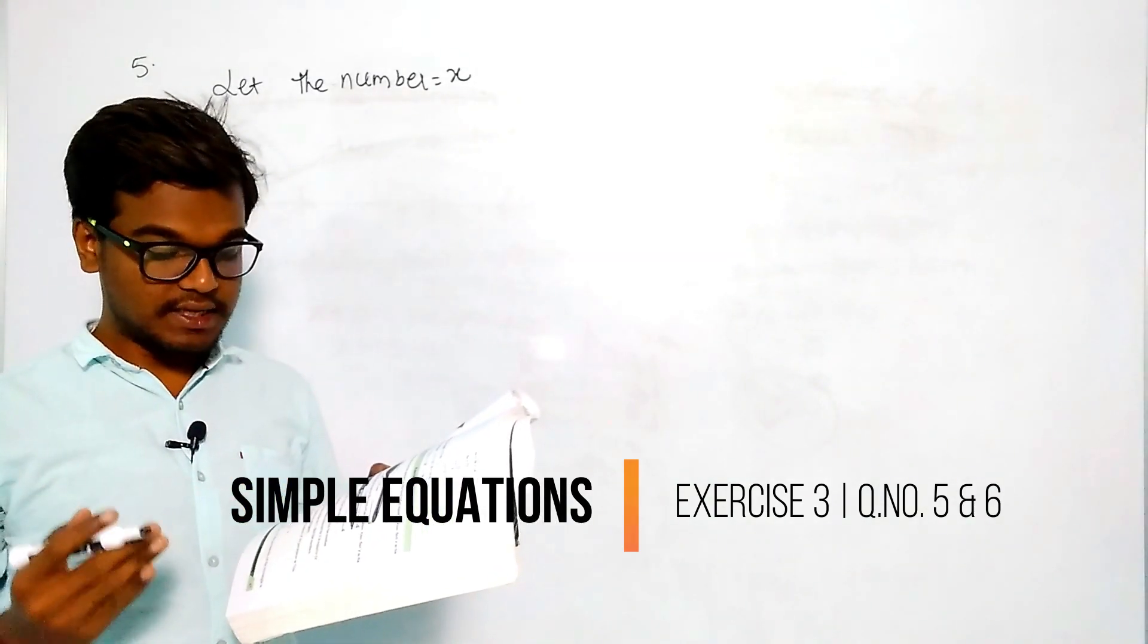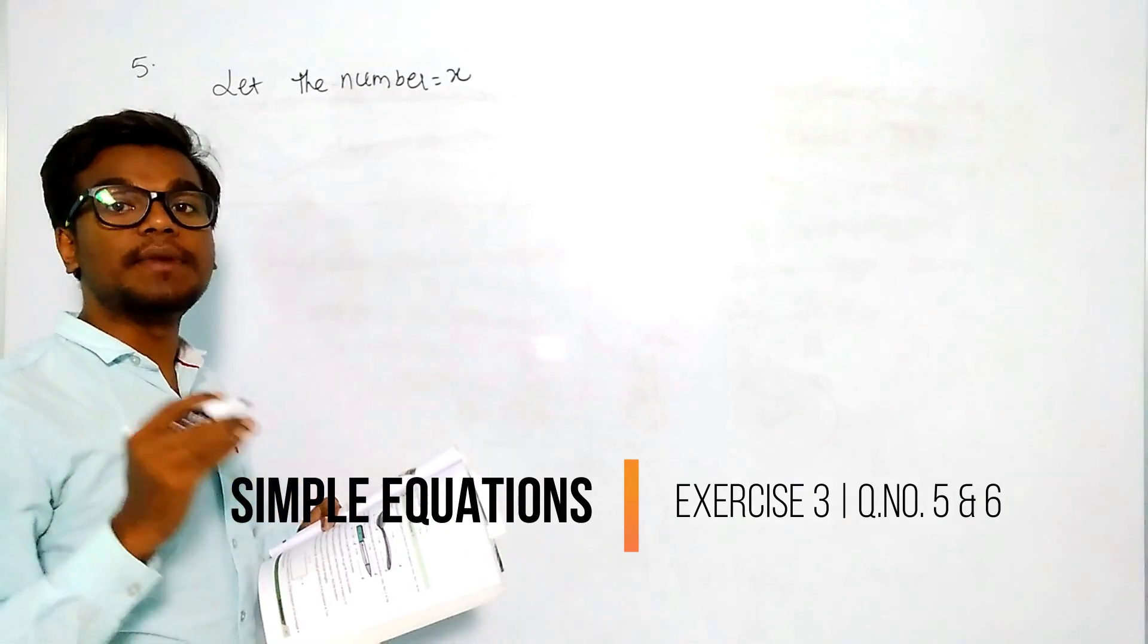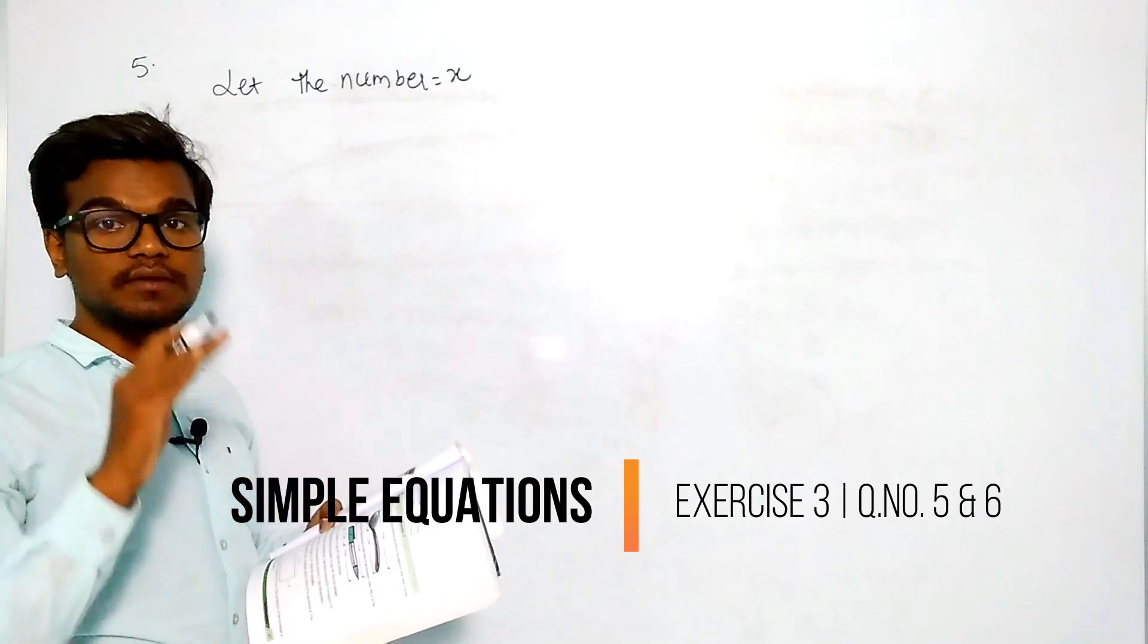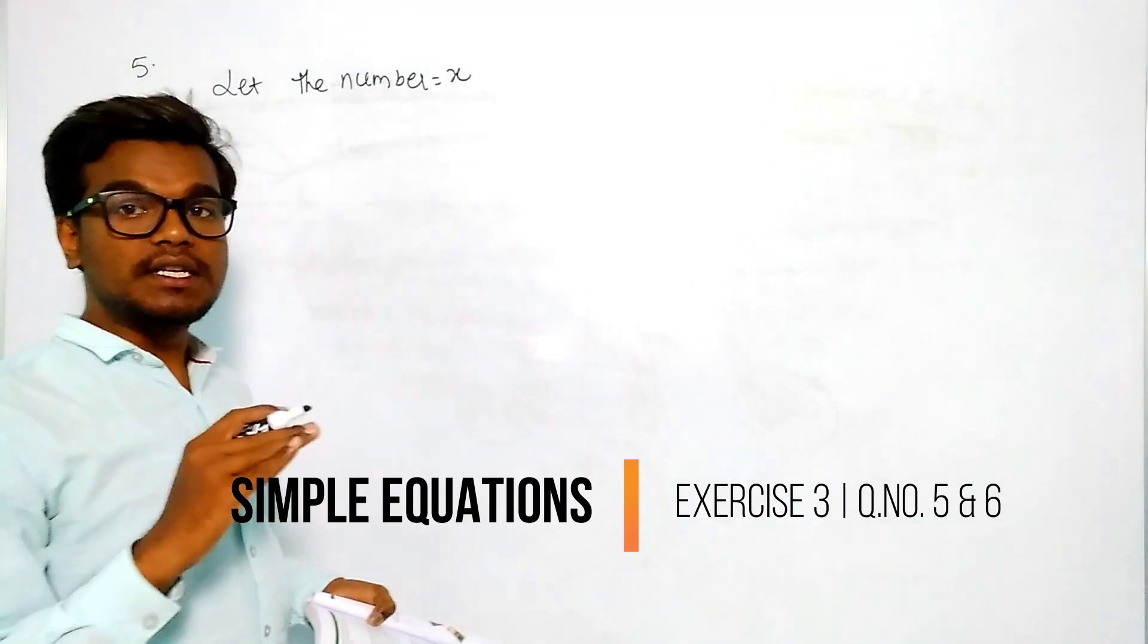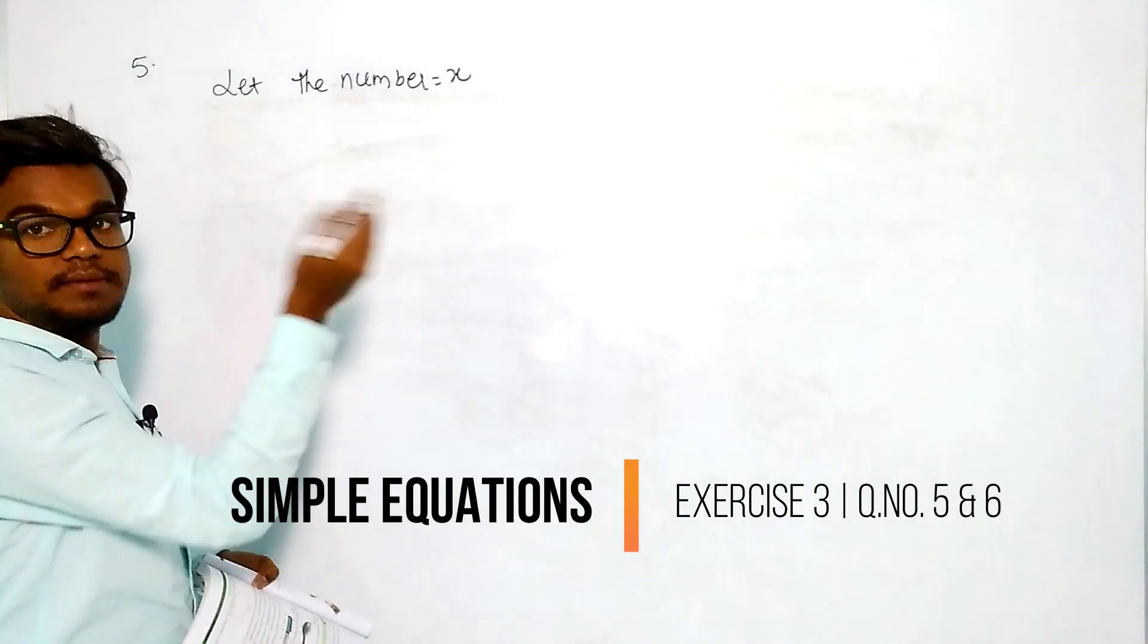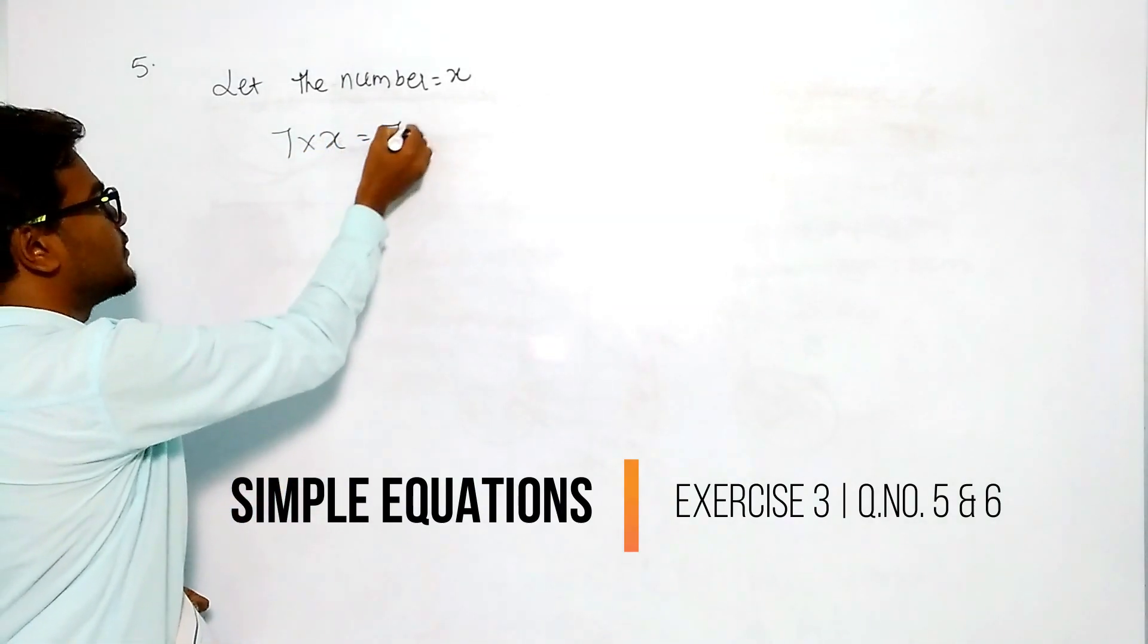Find a number which when multiplied by 7 and then reduced by 3 - reduced means subtraction, we need to decrease that value. The number multiplied by 7 is 7 into x, that equals 7x.